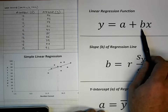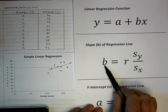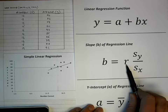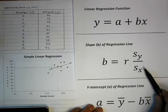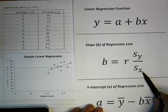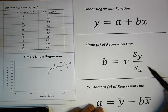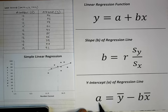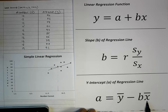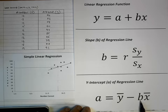The formula for the slope of the line is as follows. The slope is represented by the letter B, and it's equal to R — which is Pearson's correlation coefficient — multiplied by the standard deviation of y, divided by the standard deviation of x. Once you know the slope of the line, you can then calculate the y-intercept, designated by the letter A, which is equal to the mean of y minus the slope times the mean of x.